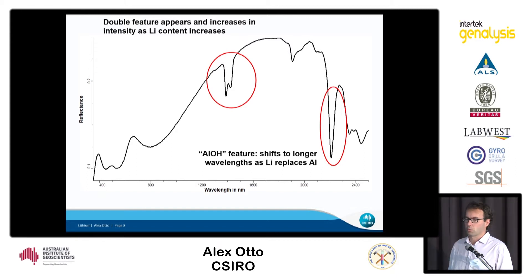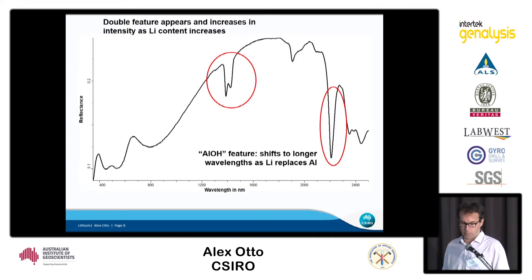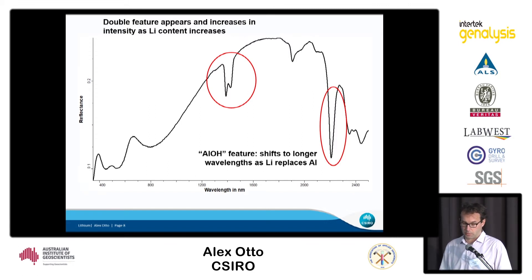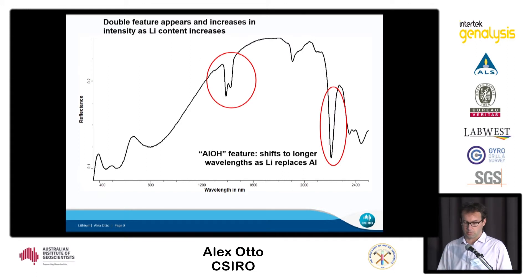What we found is that as muscovite increases its lithium content, those spectral features shift. That is a characteristic which you can utilize in quantifying how much lithium is actually in the mineral.